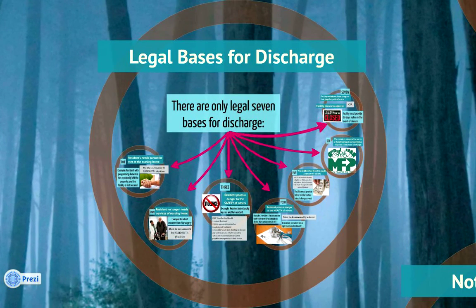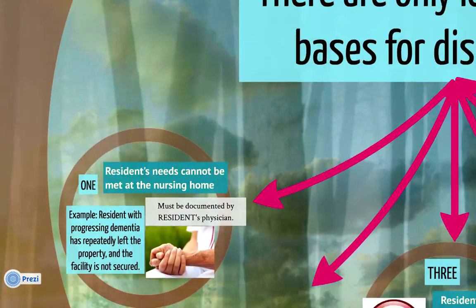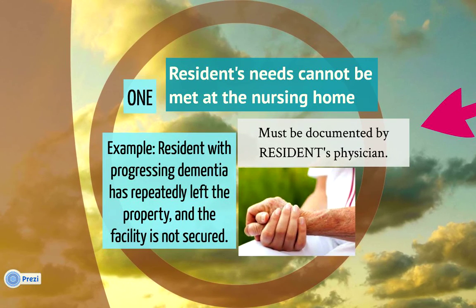Let's begin by talking about the legal basis for discharge. There are only seven situations in which discharge is proper. The first situation is when a resident's needs cannot be met at the nursing home, which basically means that a transfer or discharge is necessary for the resident's welfare. An example of this scenario would be a resident with progressing dementia who has repeatedly left a nursing home property that is not secured.